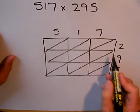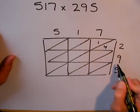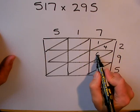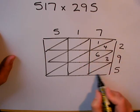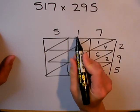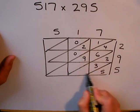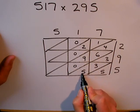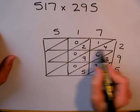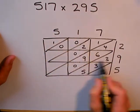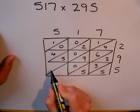Firstly, I fill in the grid. Seven twos are 14. Seven nines are 63. Seven fives are 35. One two. One nine. And one five. And finally, five twos. Five nines. And five fives.